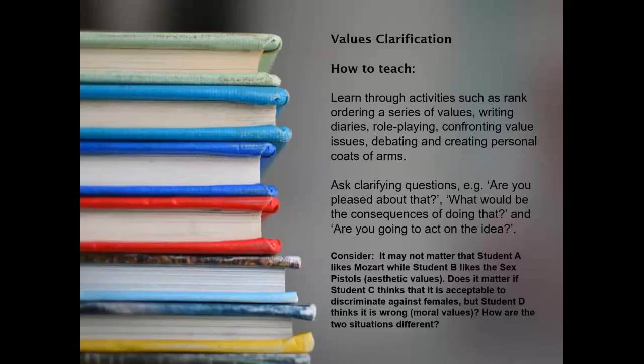Here's a consideration I've used before in values education: it may not matter that student A likes Mozart, but student B likes the Sex Pistols. But does it matter if student C thinks it's acceptable to discriminate against females, while student D thinks it is wrong? How are these two situations different? Two different opinions in both cases, but one seems more unacceptable. Have a think about that — we're looking at aesthetic values in one and moral values in another.